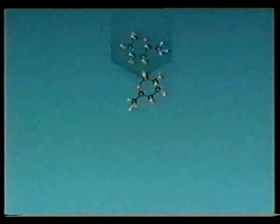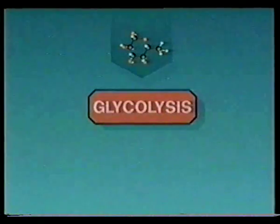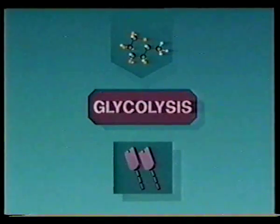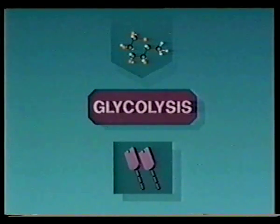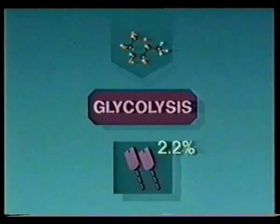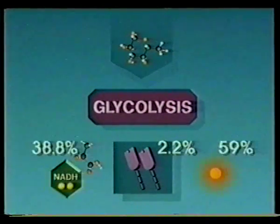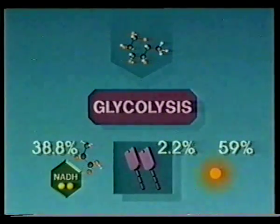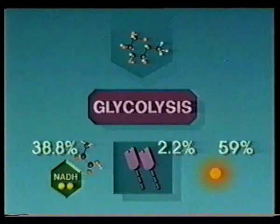In converting one molecule of glucose to pyruvate, glycolysis generates two molecules of ATP. However, these two ATPs represent only 2.2% of the available energy. The remainder is held in the pyruvate and NADH and lost as heat.